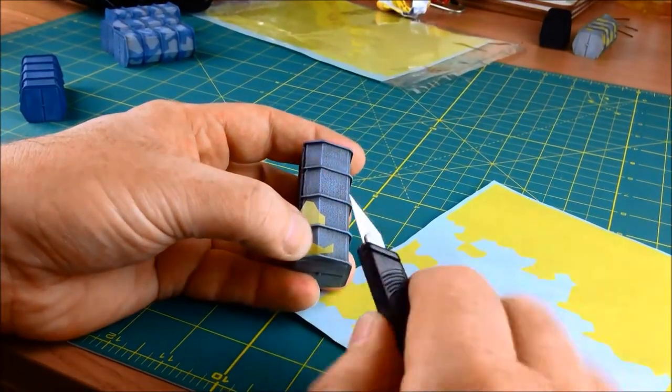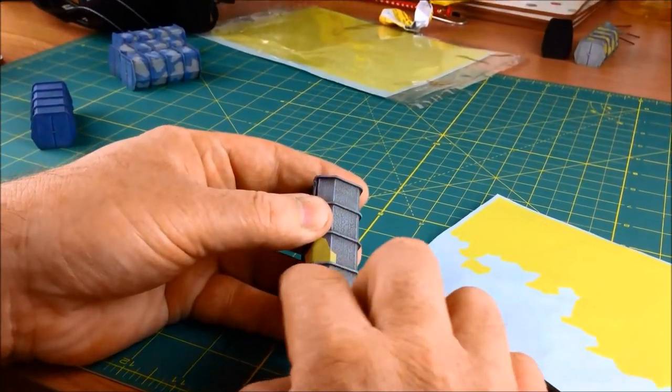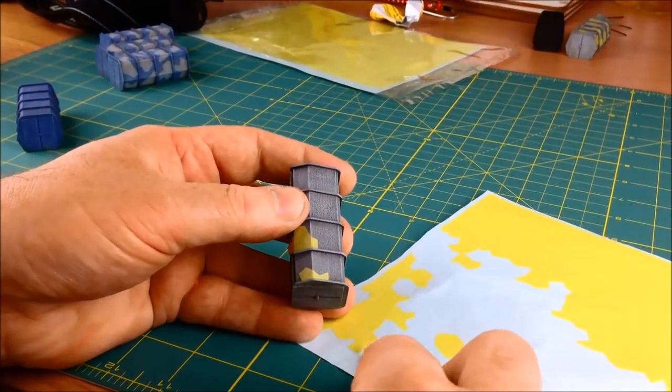Following on from the base coat, the shipping containers have been given a black wash and this has been followed by a light grey dry brush.